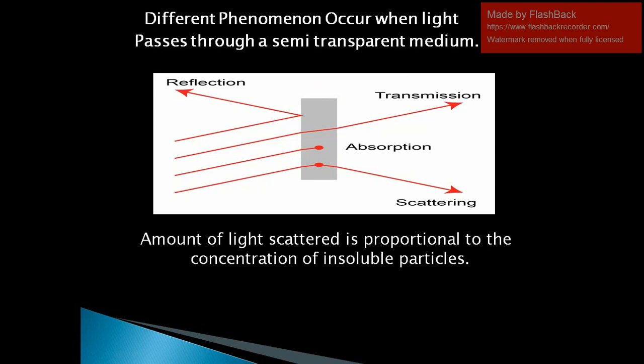If the sample solution is homogeneous, the amount of reflection is only 4% and the amount of scattering light is negligible. The amount of absorbed light and transmitted light is more in the case of a homogeneous sample solution. But if the sample solution contains suspended particles, the amount of scattering light is more. The scattering of light is studied in nephroturbitometry.